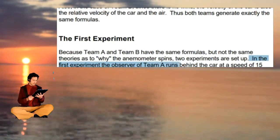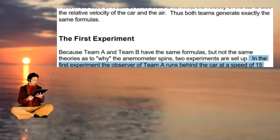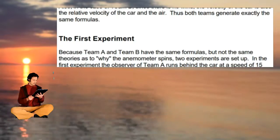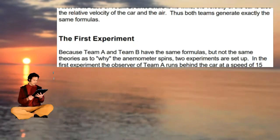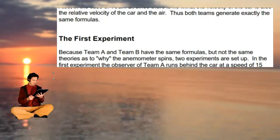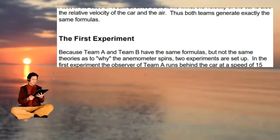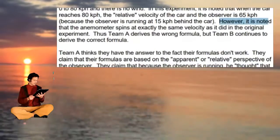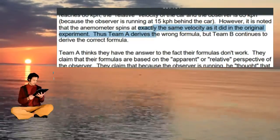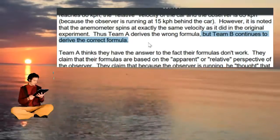In the first experiment, the observer of Team A runs behind the car at a speed of 15 kph, while the car accelerates from 0 to 80 kph with no wind, exactly as before. When the car reaches 80 kph, the relative velocity of the car and the observer is 65 kph, since the observer is running at 15 kph behind the car. However, it is noted that the anemometer spins at exactly the same velocity as it did in the original experiment. Thus Team A derives the wrong formula, but Team B continues to derive the correct formula.